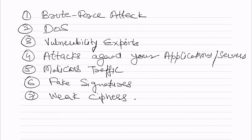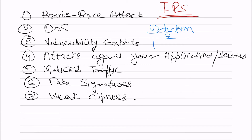IDS also informs but does not take any action. IPS will inform and also block these kinds of attacks for prevention — it doesn't wait. It can also inform the firewall so that a rule is put in place and the attack can be avoided in future, meaning auto-rules can be created in the firewall as well. So IPS does both detection and prevention.